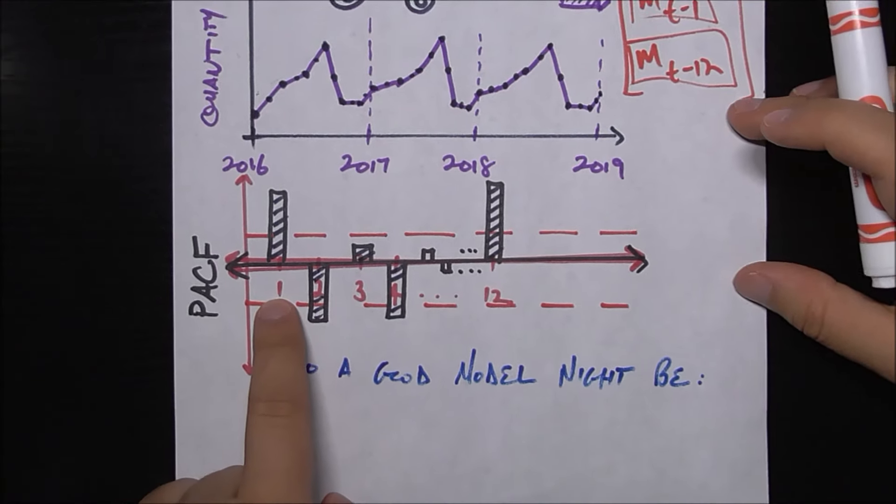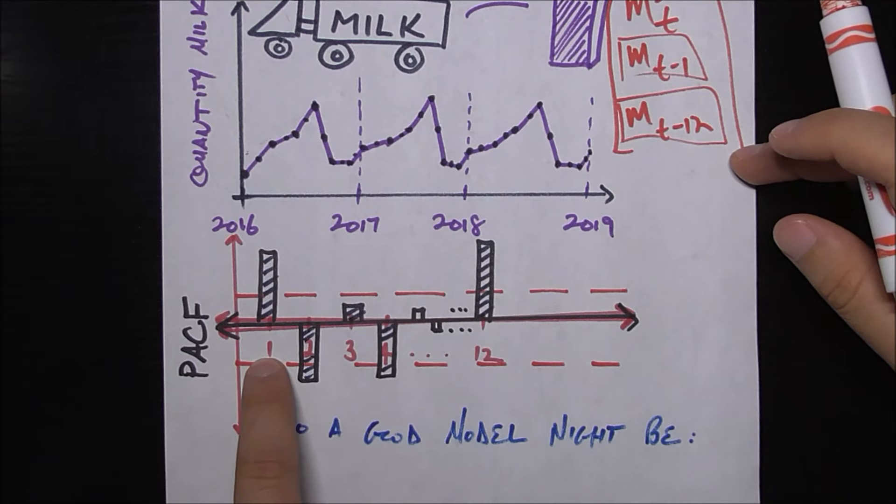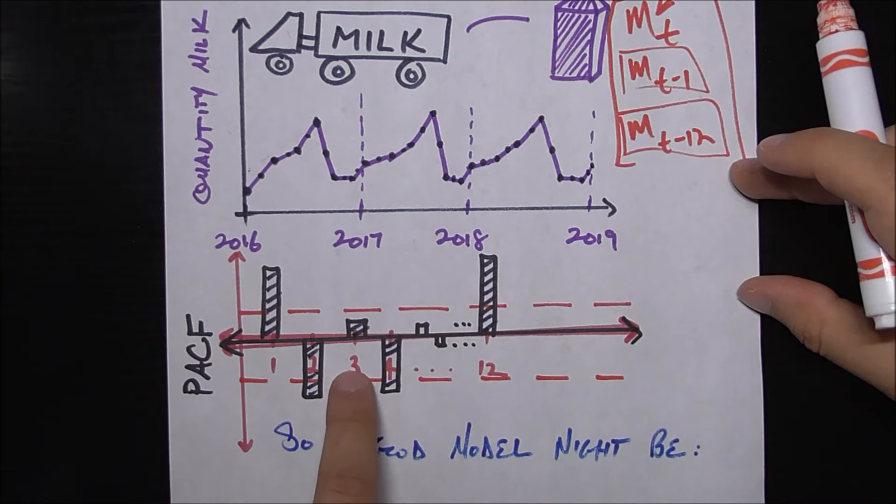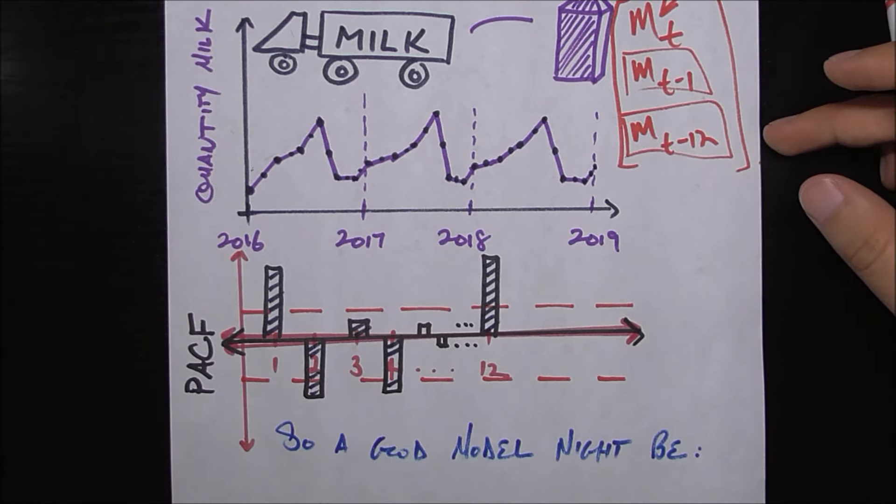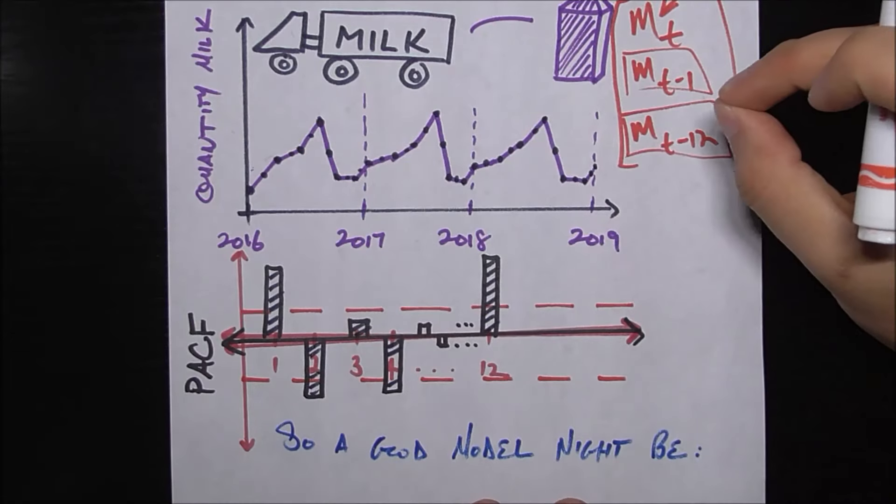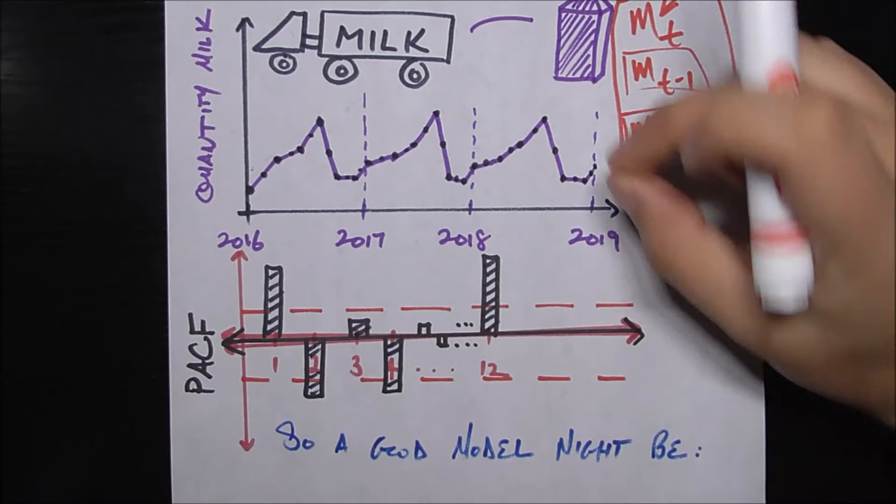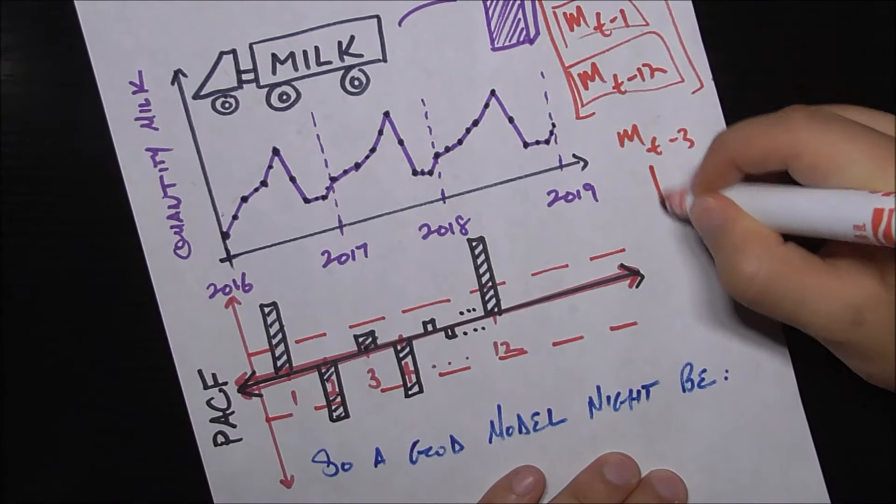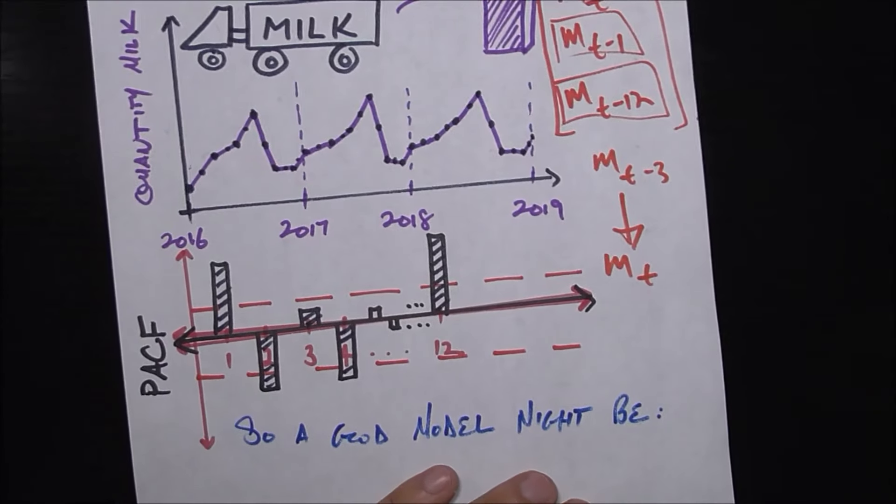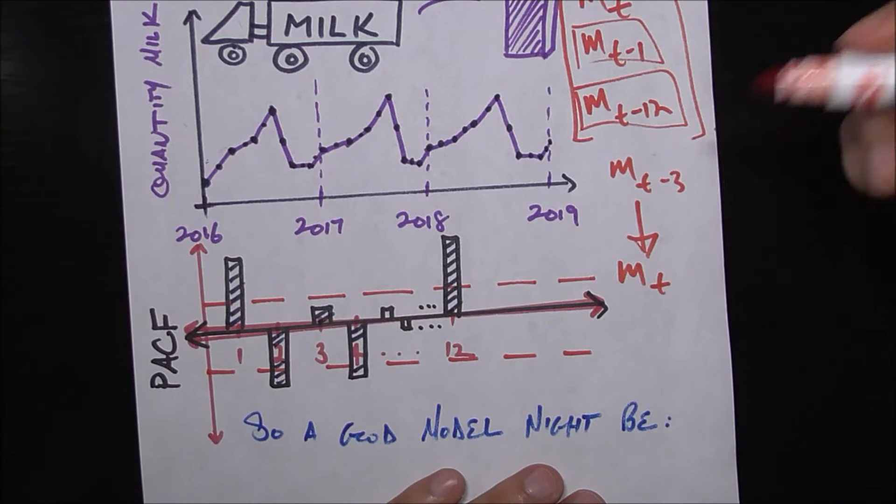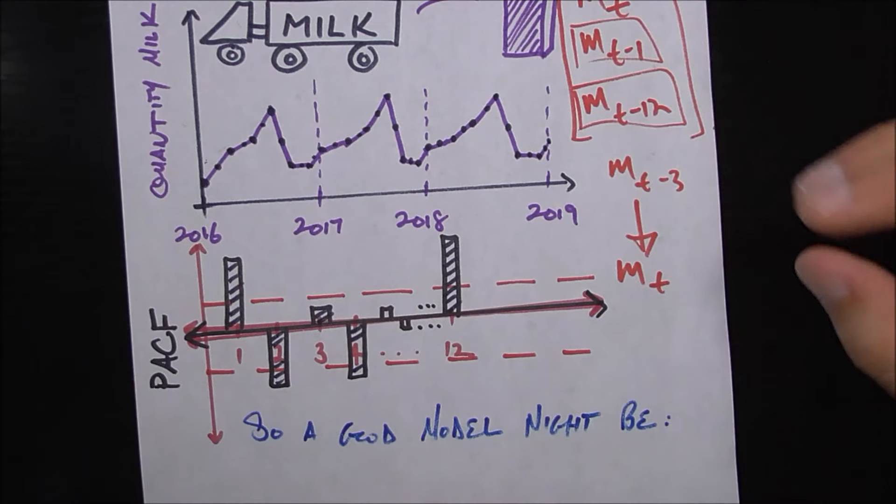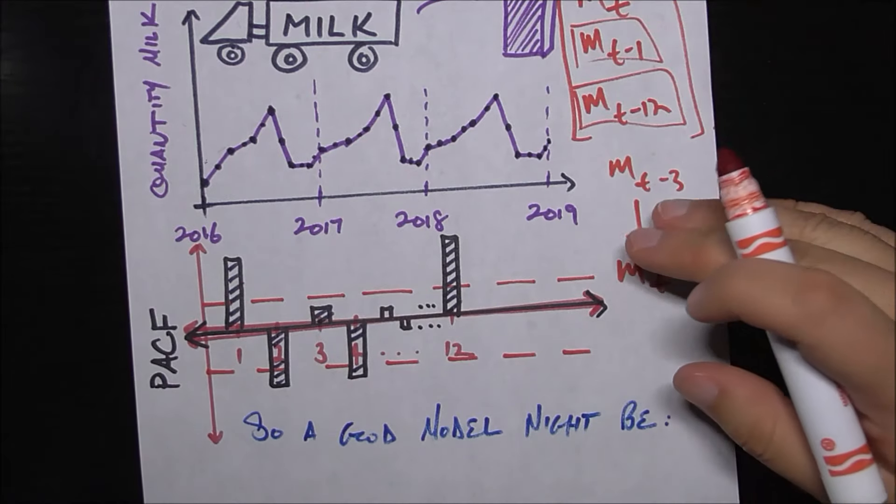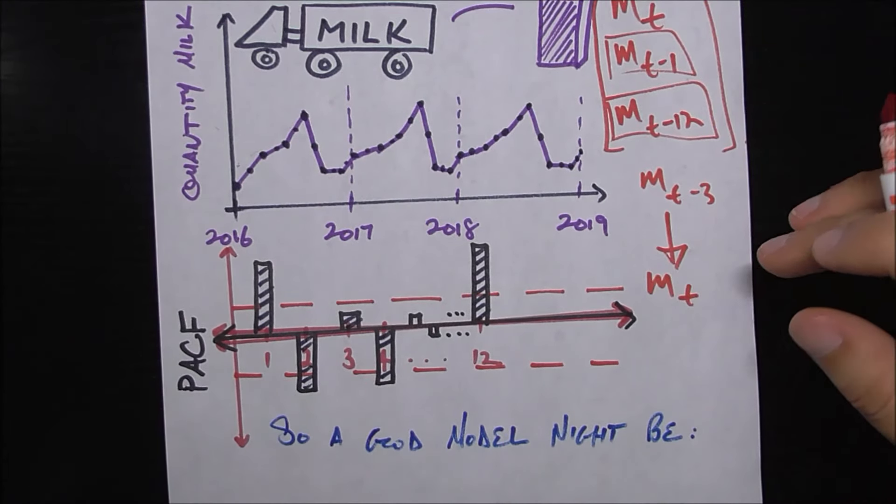If you really don't want to watch it, then the basics of PACF are that the PACF at a given lag - for example PACF of lag three - is going to be the direct correlation of the quantity of milk demanded three months ago on the quantity of milk today, without considering or removing the effects of the intermediary time periods. That means it removes the effect of m sub t minus 2, the quantity of milk two months ago, and m sub t minus 1, quantity of milk just last month. It's the direct effect.